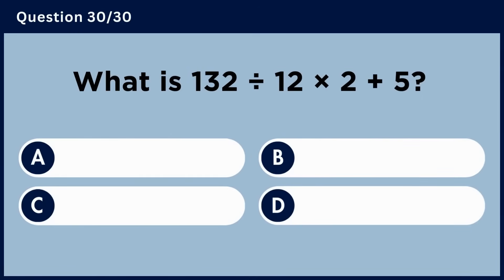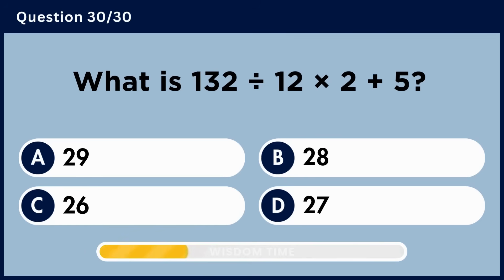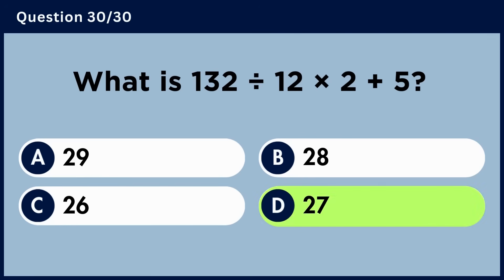What is 132 divided by 12 multiplied by 2 plus 5? Answer D: 27.